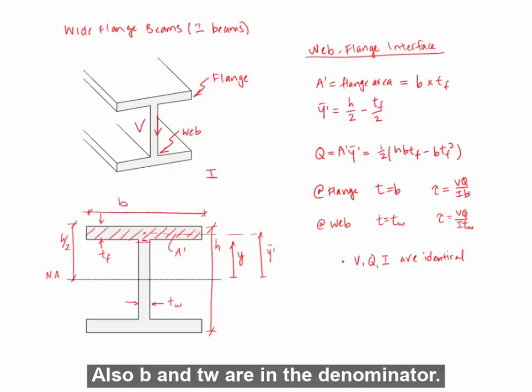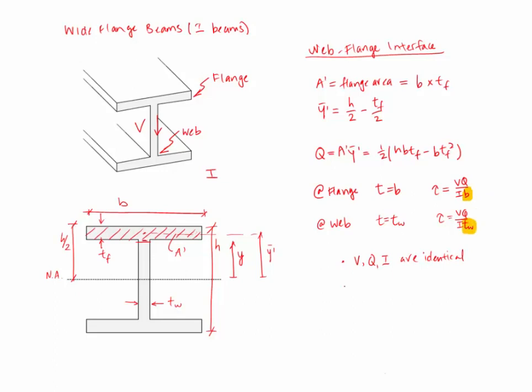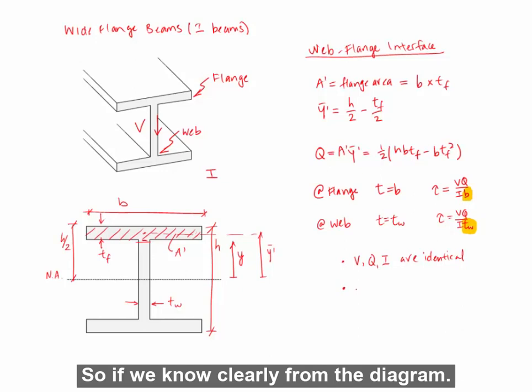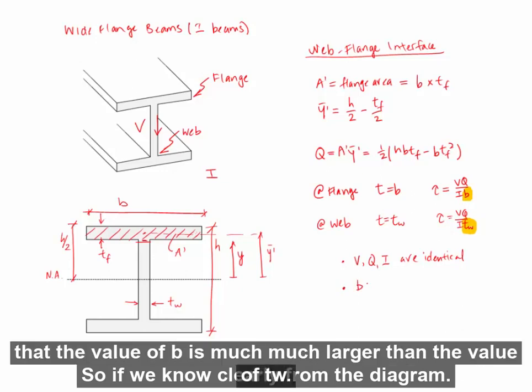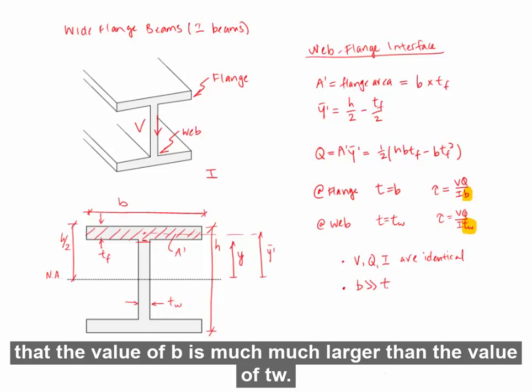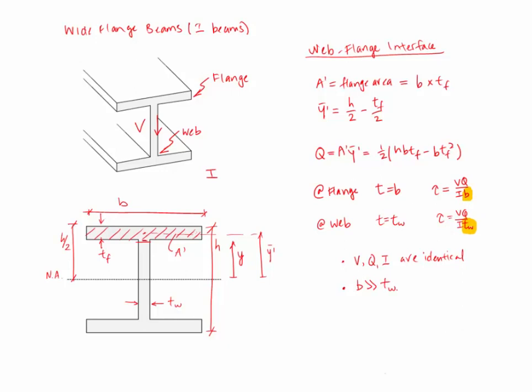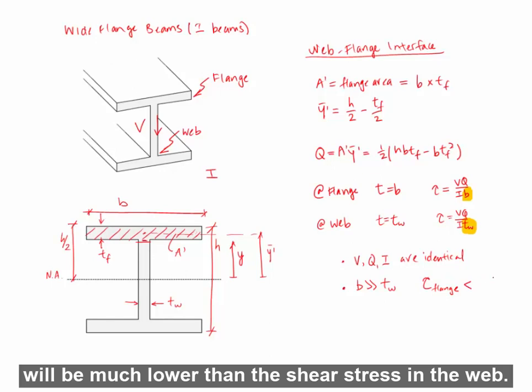Also, B and TW are in the denominator. So if we know, clearly from the diagram, that the value of B is much, much larger than the value of TW, so the shear stress in the flange will be much lower than the shear stress in the web.